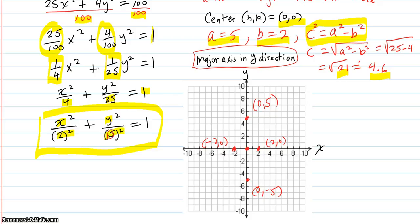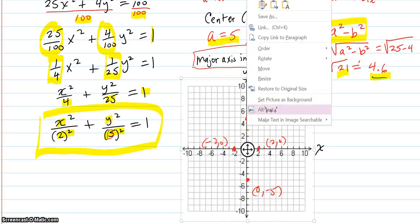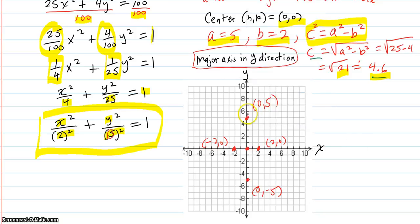And I'm going to put the foci in green, just because. So c is 4.6. So they're on the major axis. So 4.6 is really close here. It's a little bit after the 4. It's right in there. And 4.6.